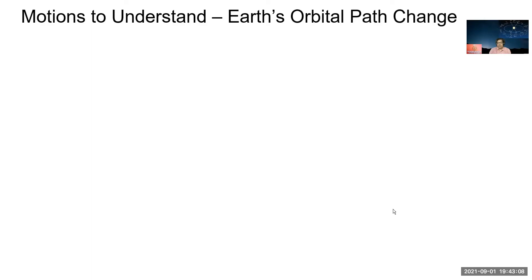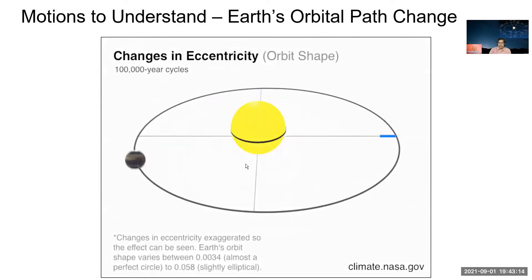And this is another interesting one, although we don't have directly nothing to do with this. This is that the orbital path also changes. It changes very slightly and it changes in about 100,000 year cycles.